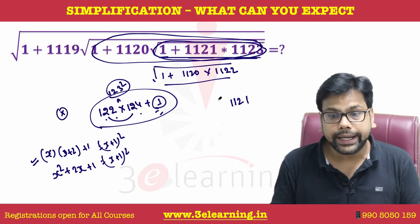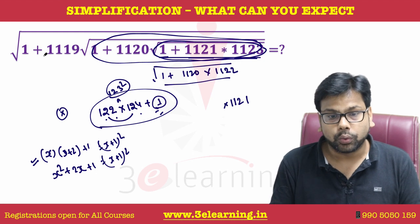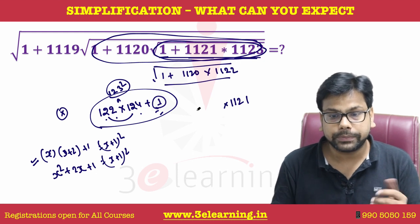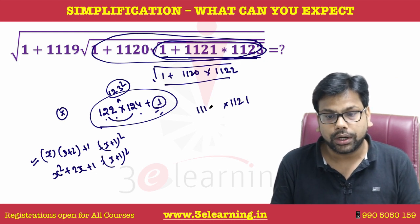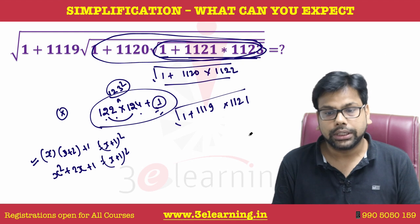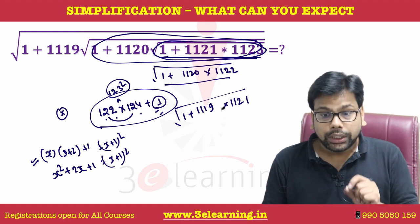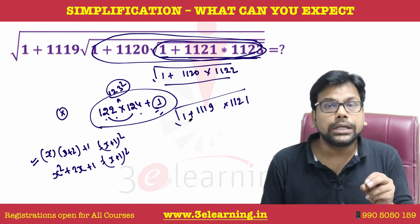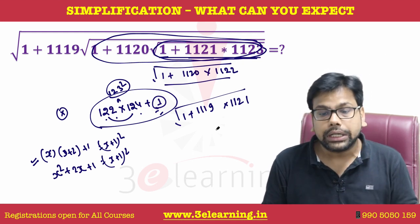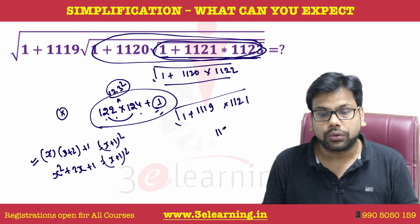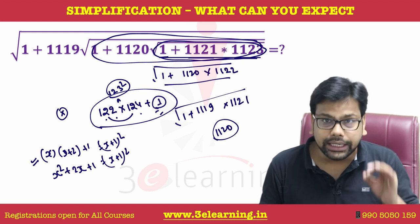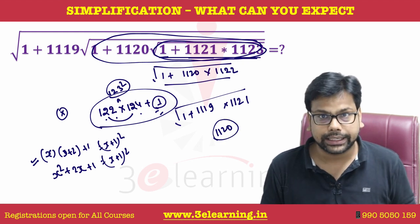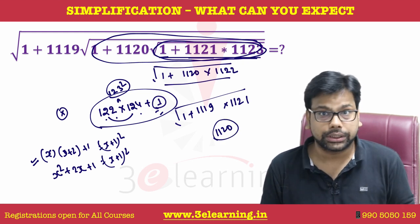So this entire expression becomes 1121. Now we have again 1121 × 1119 plus 1 under root. Gap of 2, plus 1 — so the under root is actually equal to 1120. And it's hardly a 5 to 6 second question.